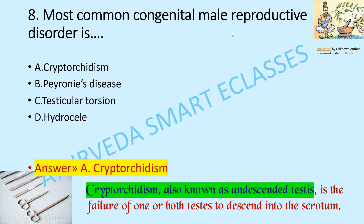The most common congenital male reproductive disorder is cryptorchidism, Peyronie's disease, testicular torsion, or hydrocele? The answer is cryptorchidism. Cryptorchidism, also known as undescended testis, is a condition where the failure of one or both testes to descend into the scrotum occurs.